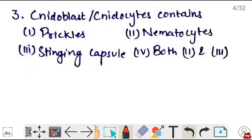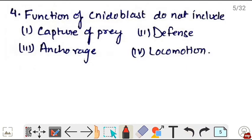Next, cnidoblast or cnidocytes contain - so cnidoblast and cnidocytes have a structure called nematocyst or stinging capsule, which contains hypnotoxin for damaging their prey. So correct is option 4, both 2 and 3. Next, function of cnidoblast does not include - cnidoblast functions are capturing of prey, anchorage and defense. But locomotion is not a function of cnidoblast. Correct is option 4.